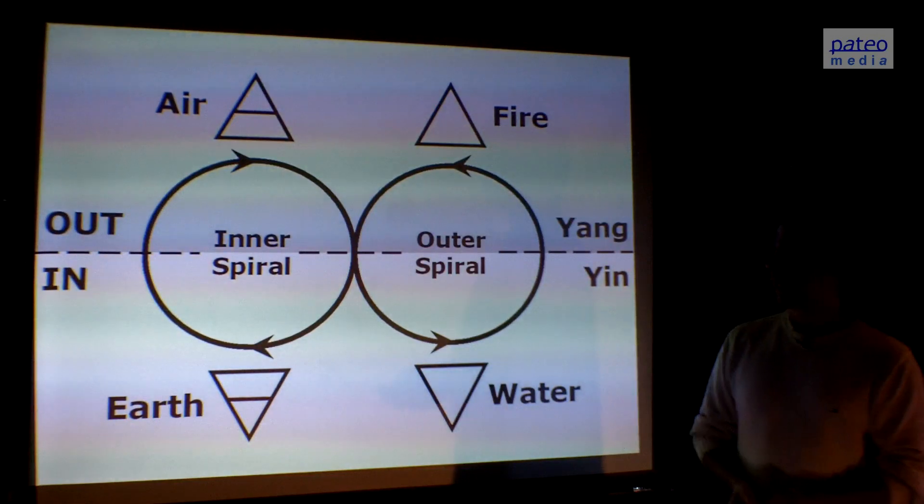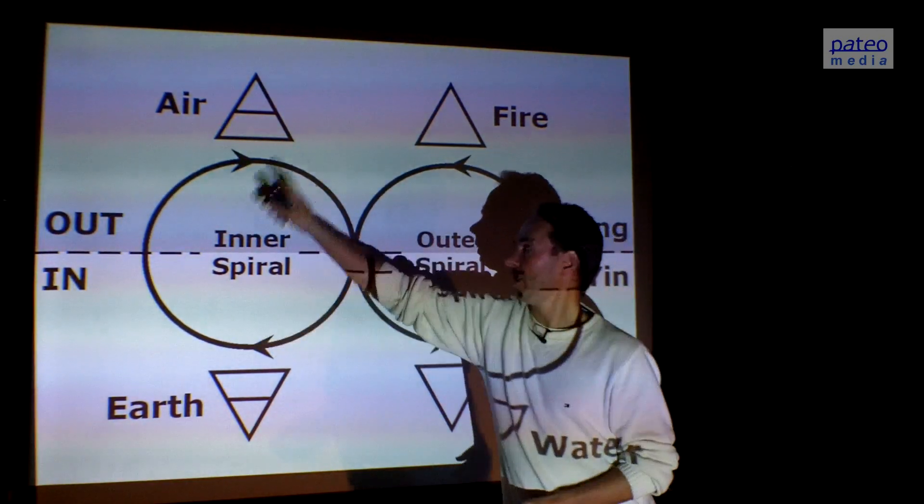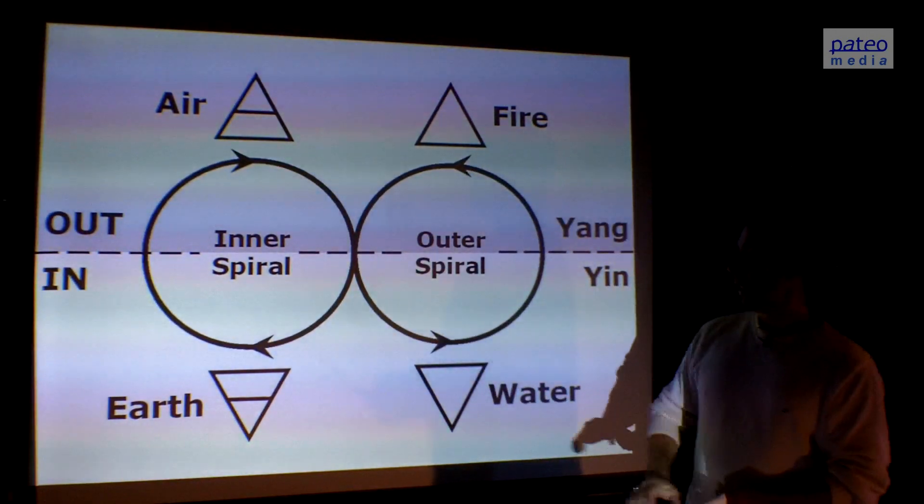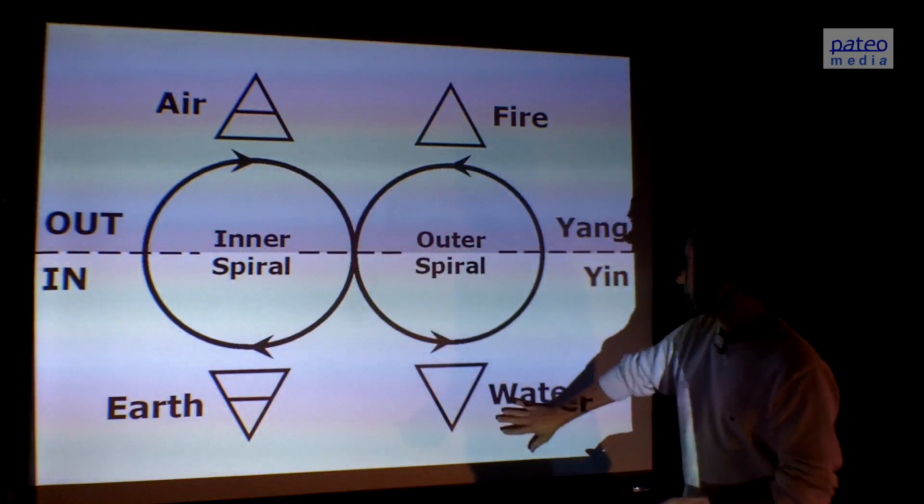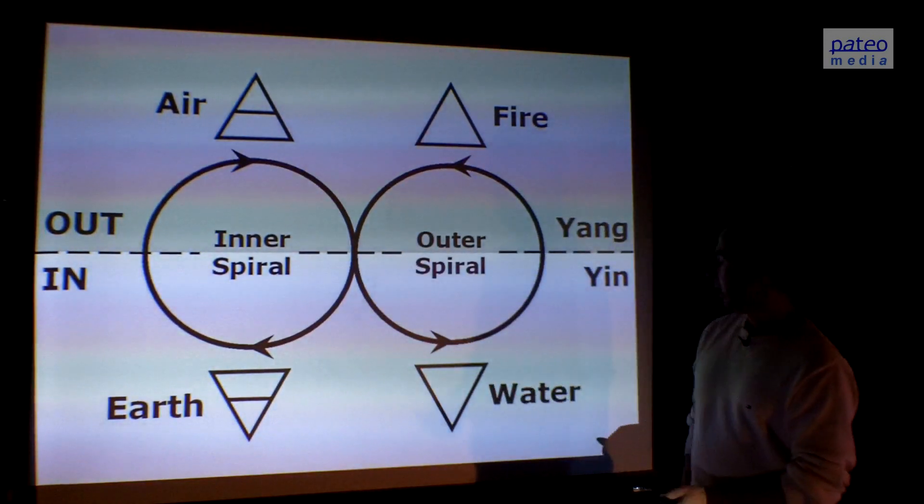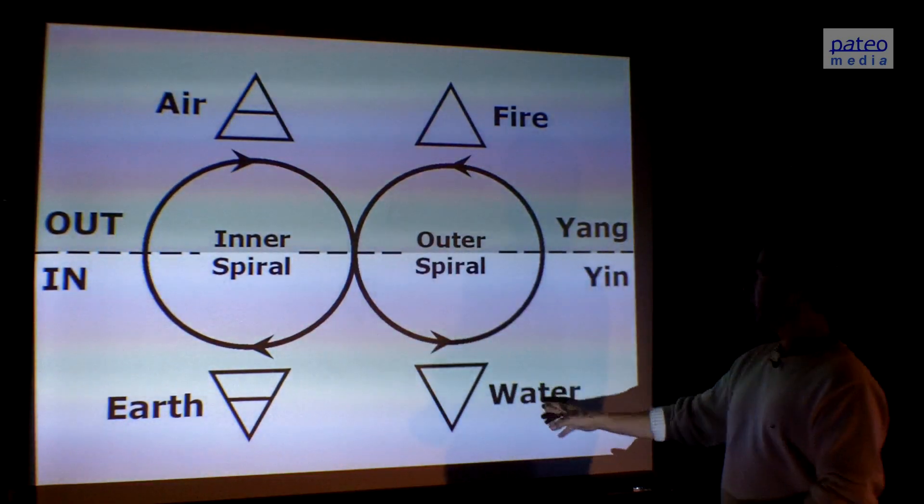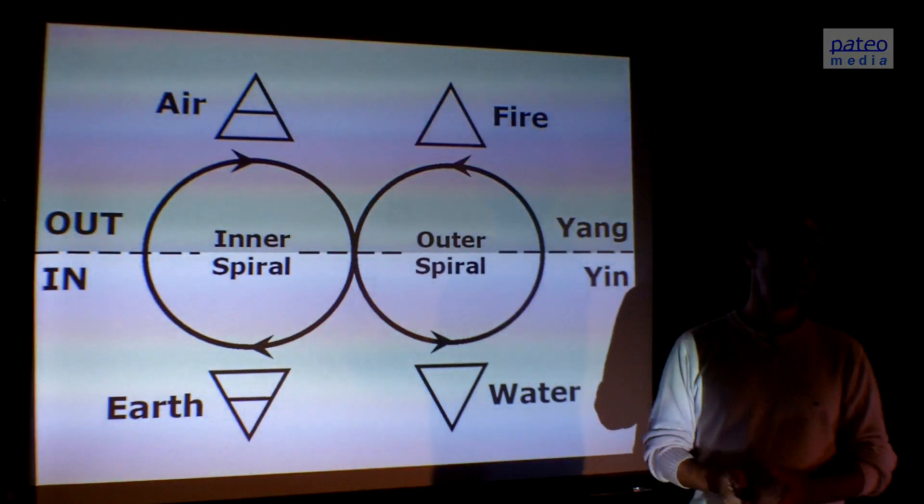We can also make it like a lemniscate, an infinite movement, which is spiraling all the way down. This is the inner spiral, earth and air. This is the outer spiral, water and fire. Earth is going in, air is going out. This is going in, that is going out. So we can also depict it in this way.